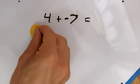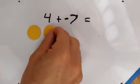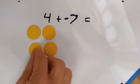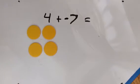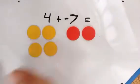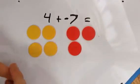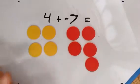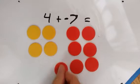We represent the positive numbers with these yellow side up counters. So we have four positive counters and then we have one, two, three, four, five, six, seven negatives.